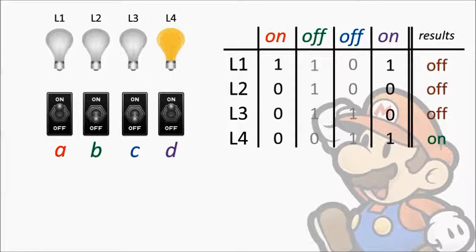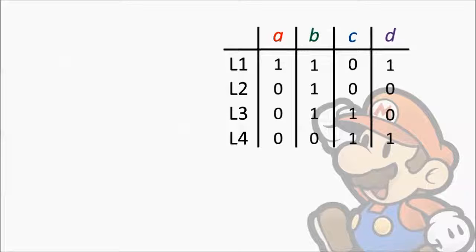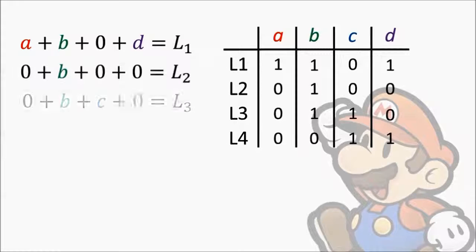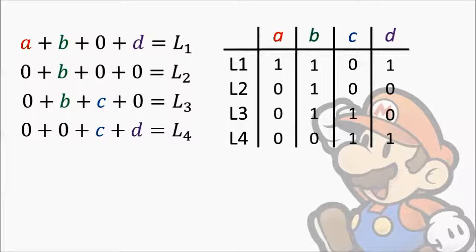You might say that the final result is a superposition of the toggling patterns. So knowing this, how do we get the solution? We can write out the final state of each light as a superposition of all the switches that control it. For example, light L1 is a superposition of the switches A, B, and D. So we write A plus B plus D equals L1. I've left a 0 in there just to make sure that it's clear that switch C does not affect light 1. We can do this for all the other lights. For each light, we get one equation.